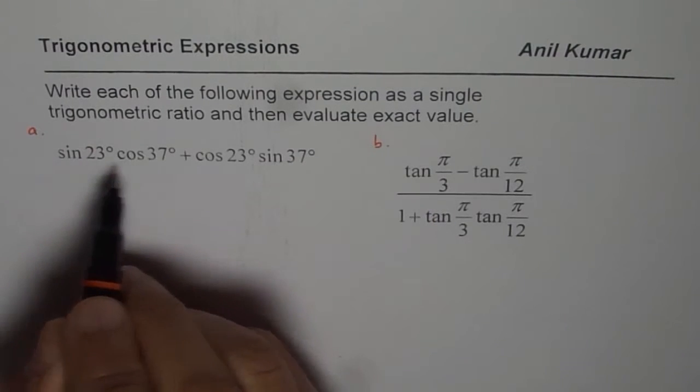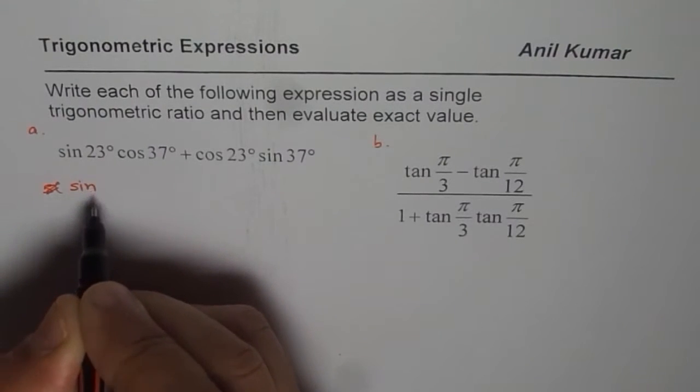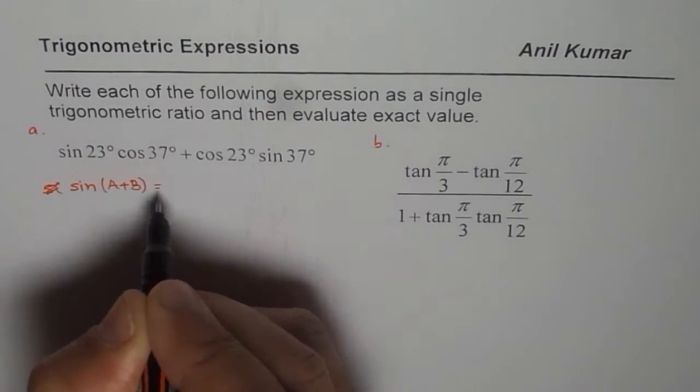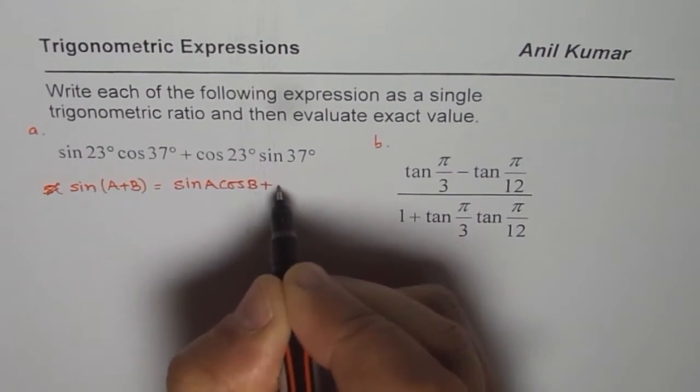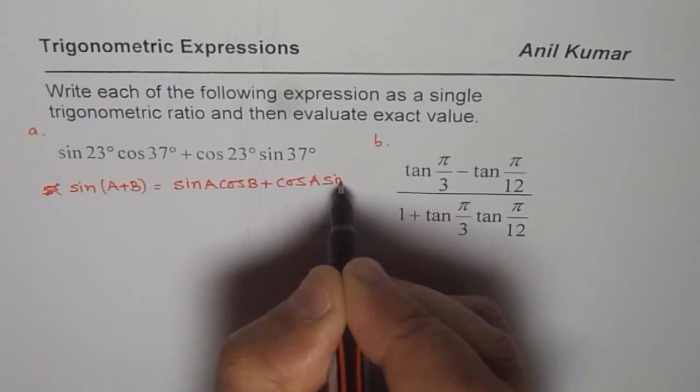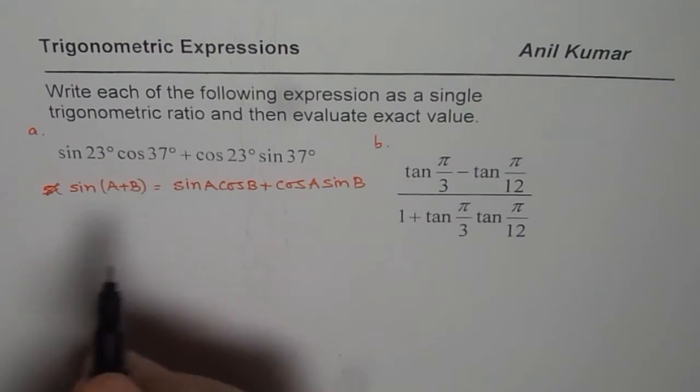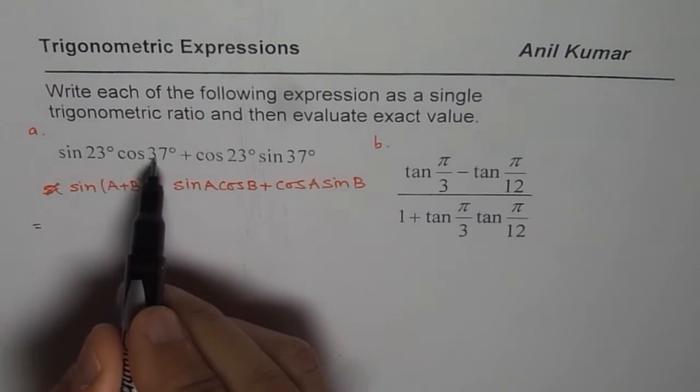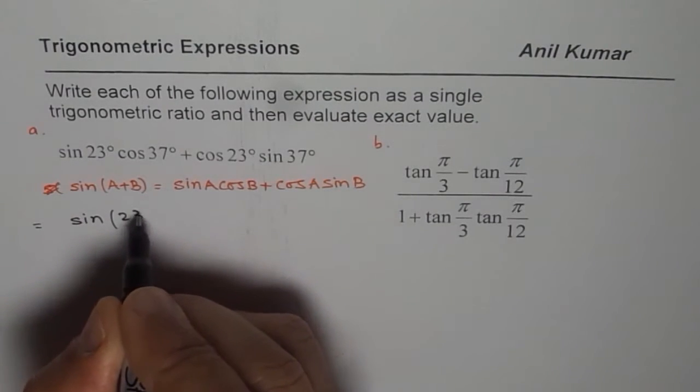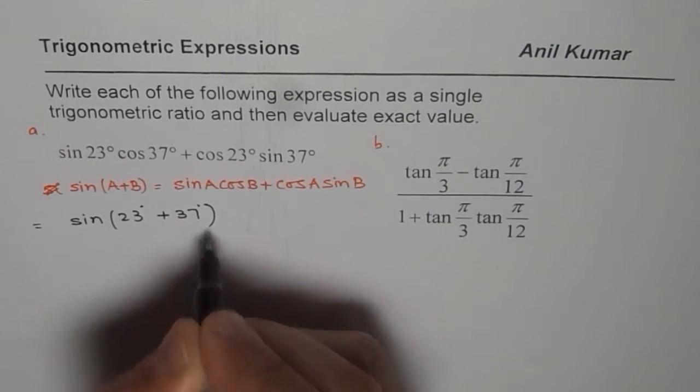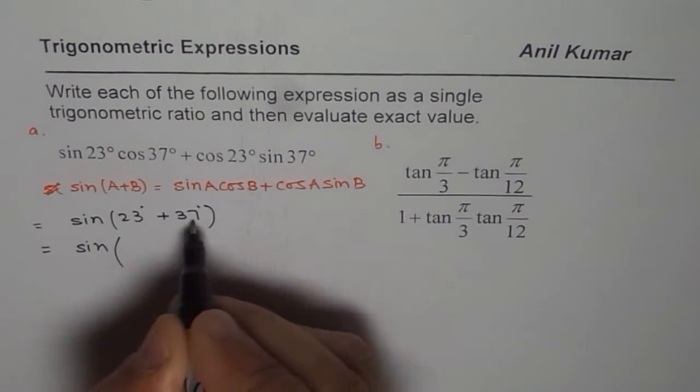If you recall, the first one is kind of sin(A+B). We can write this as sin(A+B) equals sin A cos B plus cos A sin B. If you apply this formula, you can write all this as a single trigonometric ratio. So sin 23° cos 37° plus cos 23° sin 37° equals sin of 23 degrees plus 37 degrees, and that is equal to sin 60 degrees.